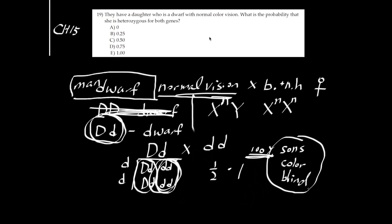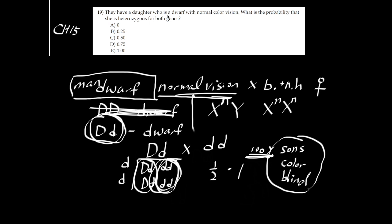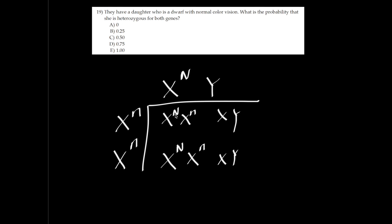Number 19: they have a daughter who is a dwarf with normal color vision. What is the probability she is heterozygous for both genes? For dwarfism, all dwarf daughters from this cross are heterozygous Dd — 100%. For the X-linked trait, all daughters are heterozygous — also 100%. So 1 × 1 = 1. The answer is E.